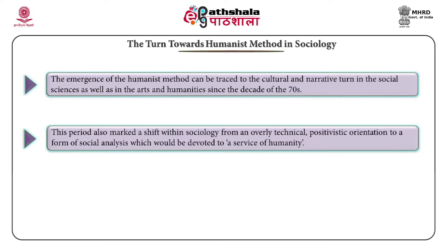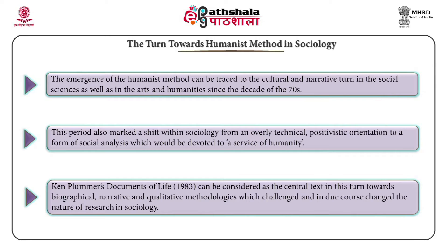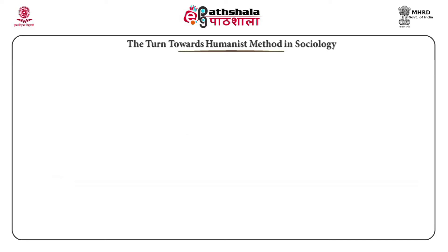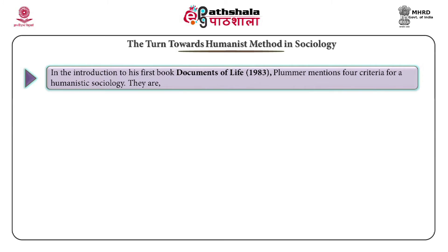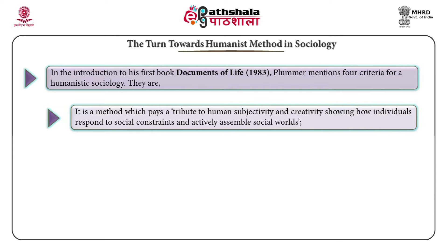This period also marked a shift within sociology from an overly technical positivistic orientation to a form of social analysis which would be devoted to the service of humanity. Ken Plummer's Documents of Life can be considered as the central text in this turn towards biographical, narrative, and qualitative methodologies, which challenged and in due course changed the nature of research in sociology. In the introduction to his book Documents of Life, 1983, Plummer mentions four criteria of a humanistic sociology. Number one, it is a method which pays tribute to human subjectivity and creativity.